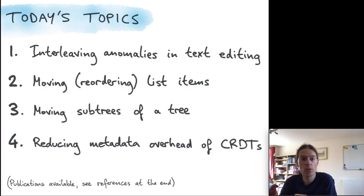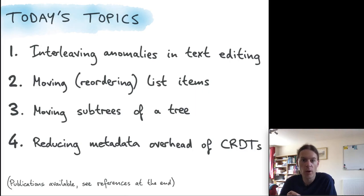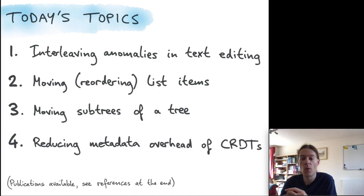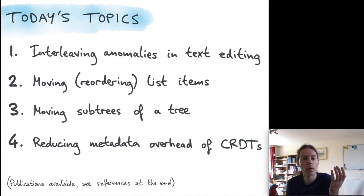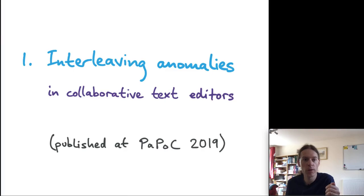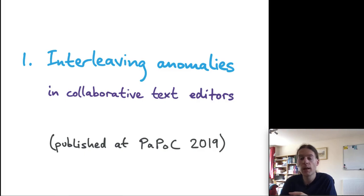I've concluded after several years of working on CRDTs that a simple version is easy to implement, but getting it right so it actually satisfies user expectations is difficult — CRDTs are easy to implement badly. Today I want to look at four topics where CRDTs are difficult, and for most of them we have solutions as well.